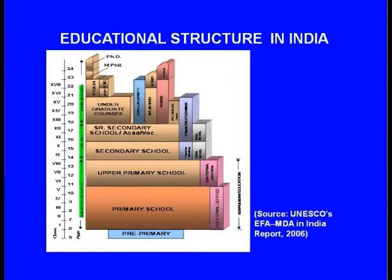First, let us look at the educational structure in India. In India, up to the age of 6, the education infrastructure is categorized as pre-primary, then primary school, upper primary school, secondary school, senior secondary school, then undergraduate and post-graduate courses, leading to MPhil, and finally, the top most educational qualification is the PhD.